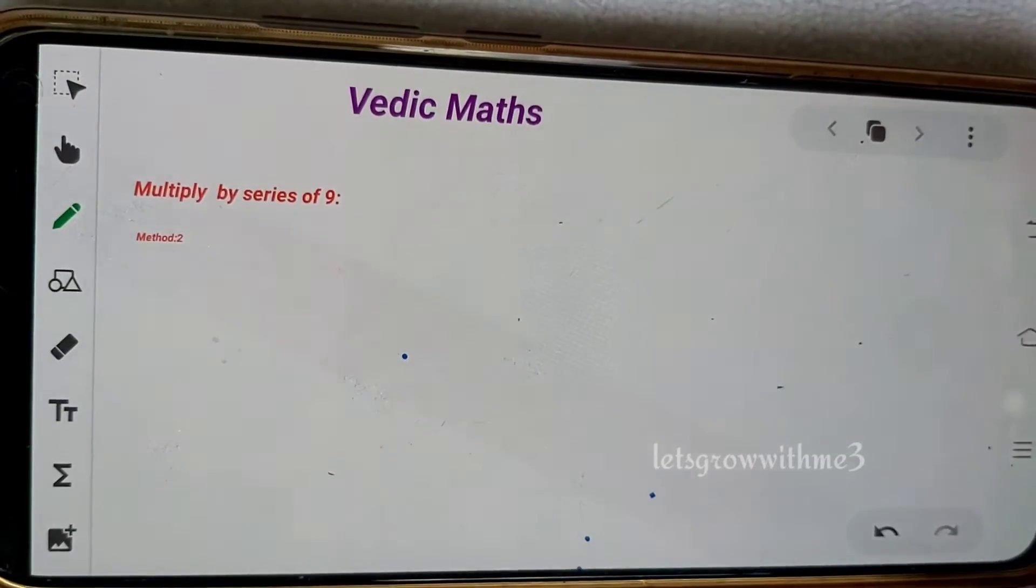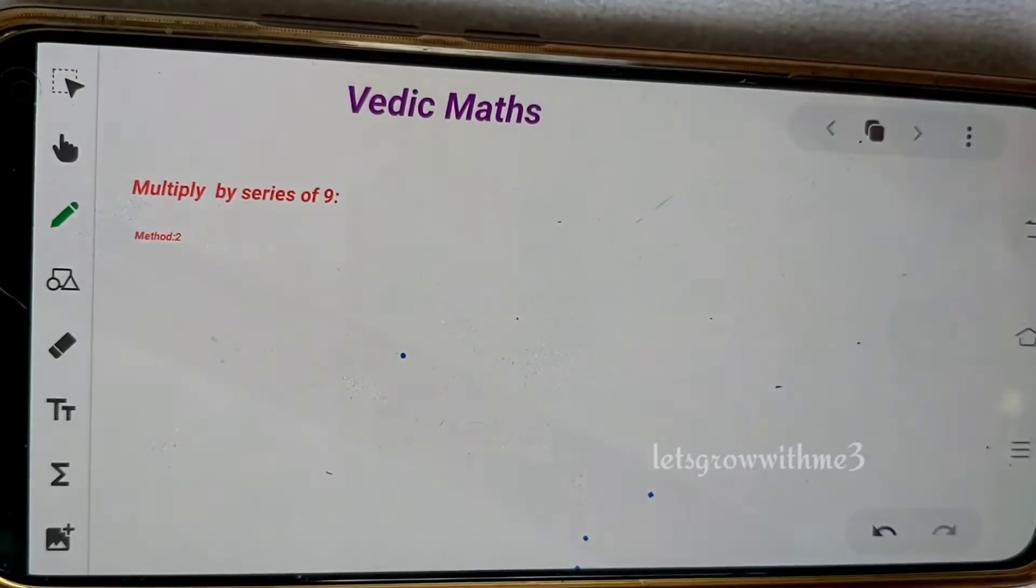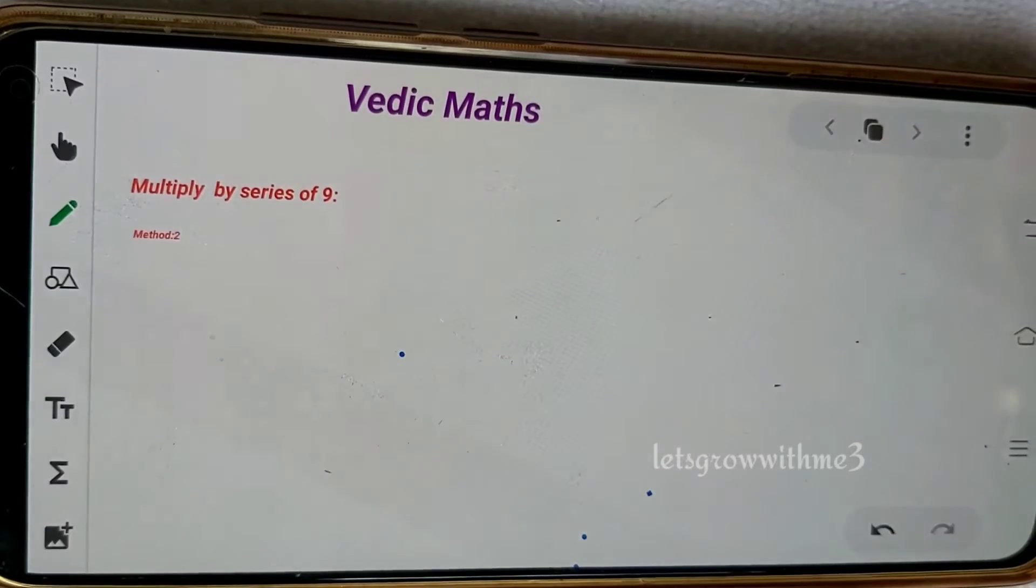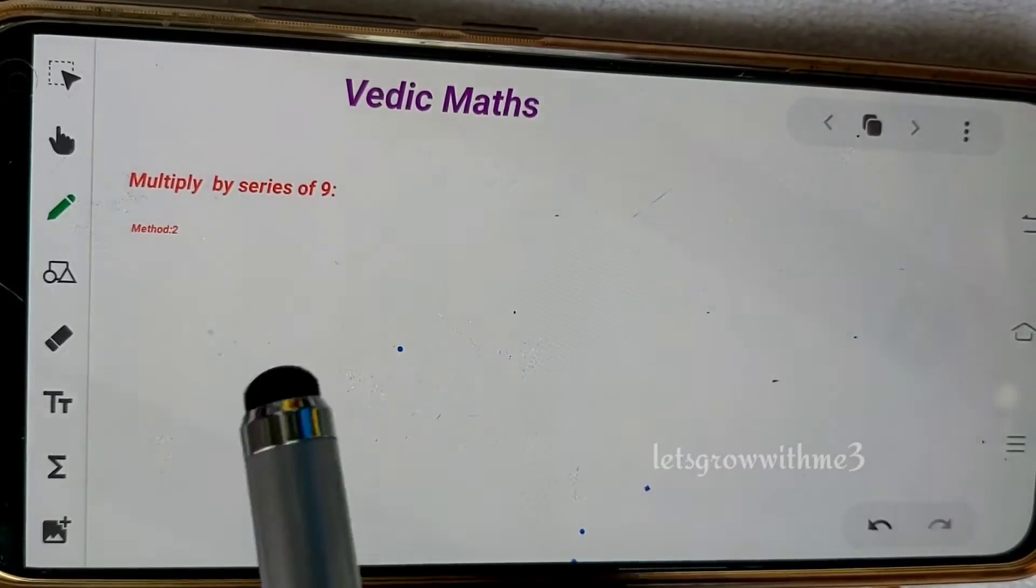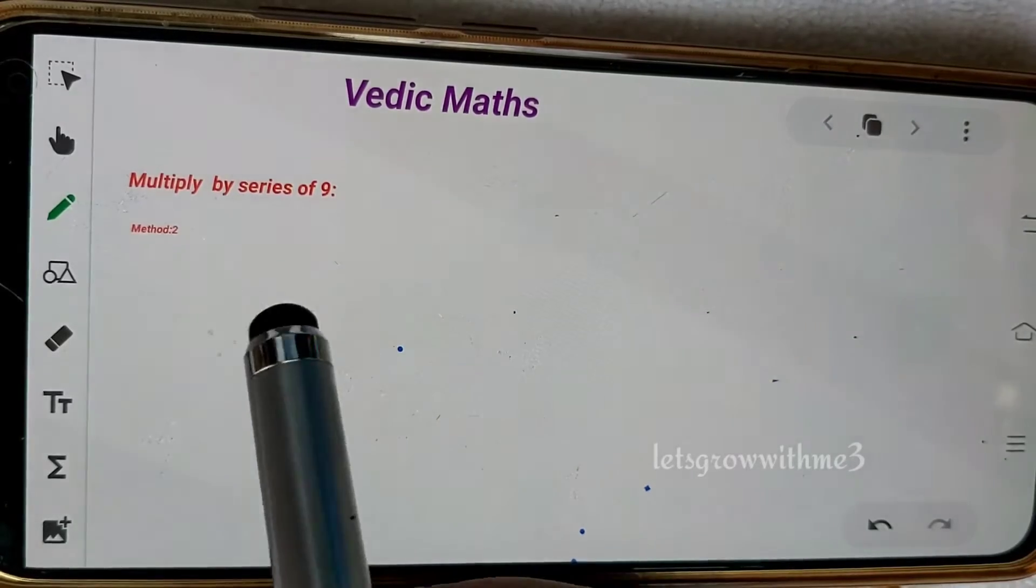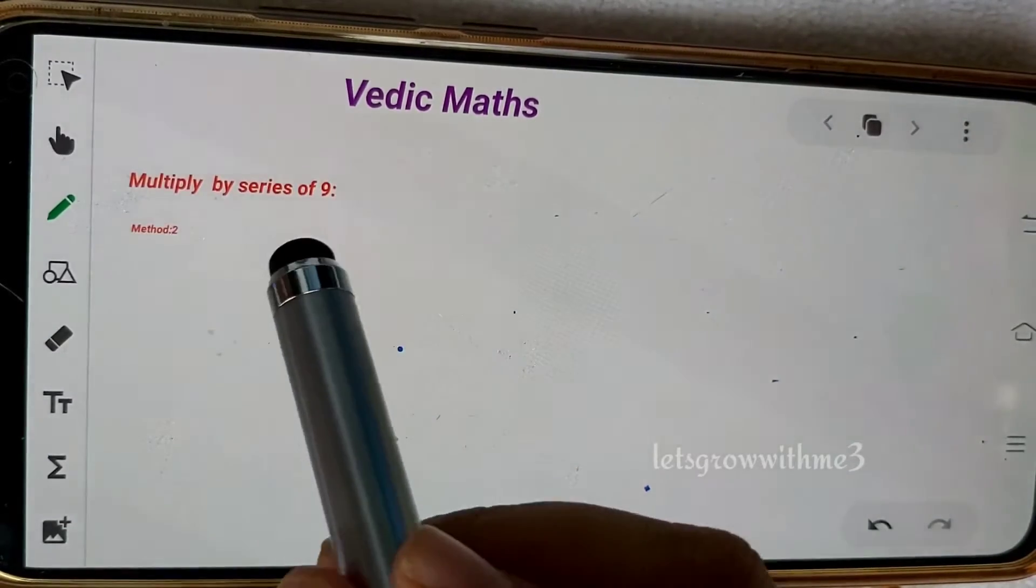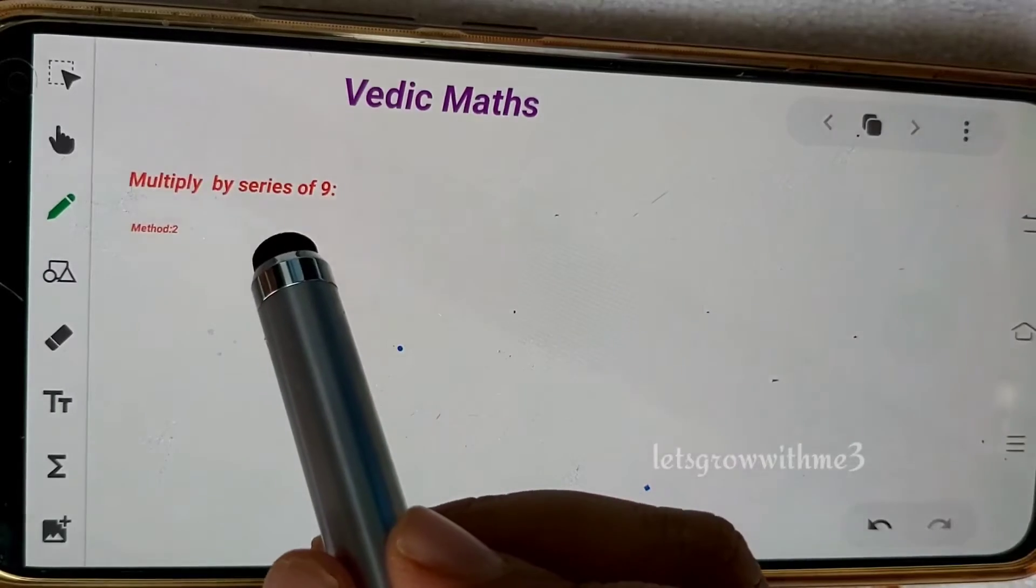In this method we have one condition: the number of digits at the left hand side must be equal to the number of 9s at the right hand side.